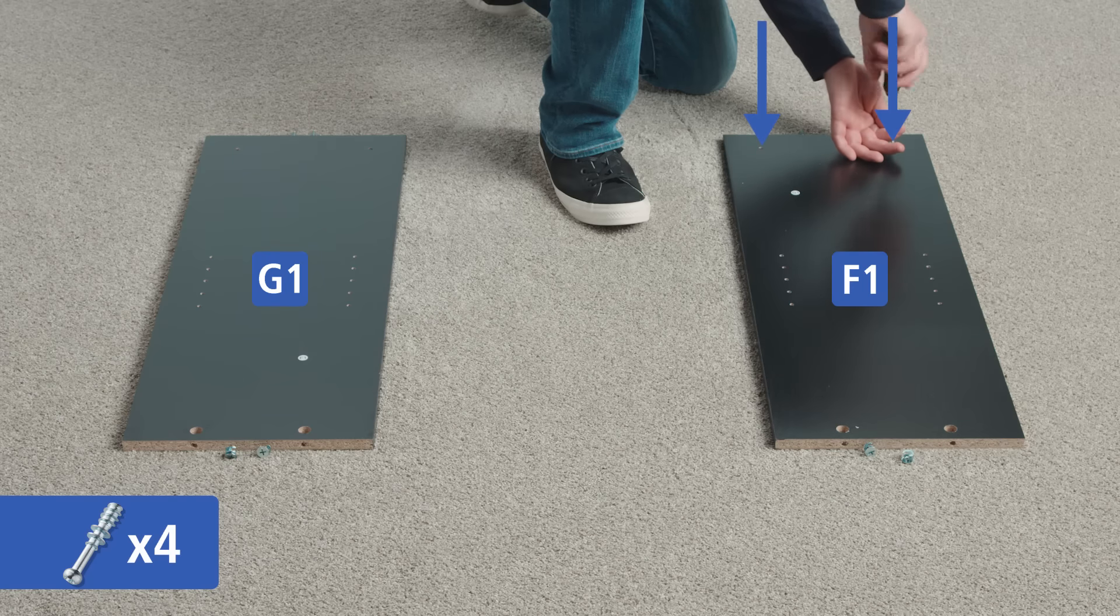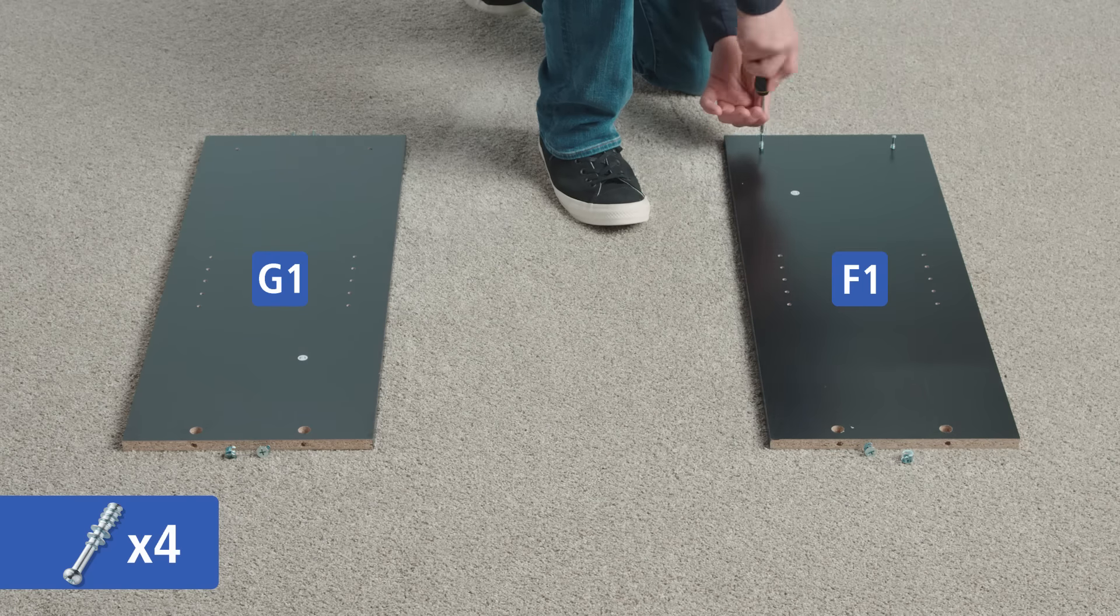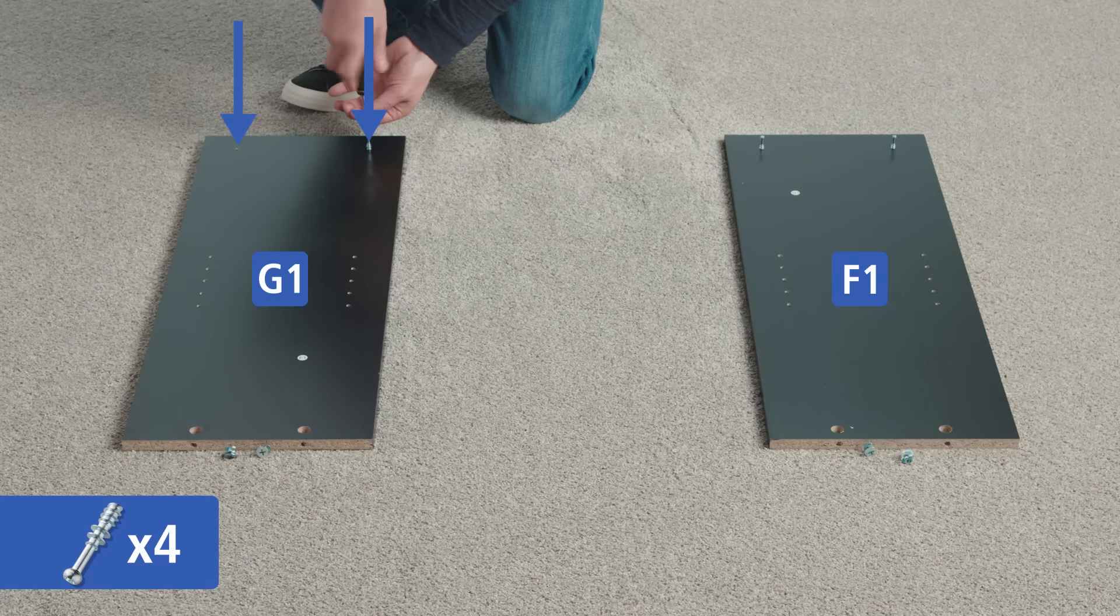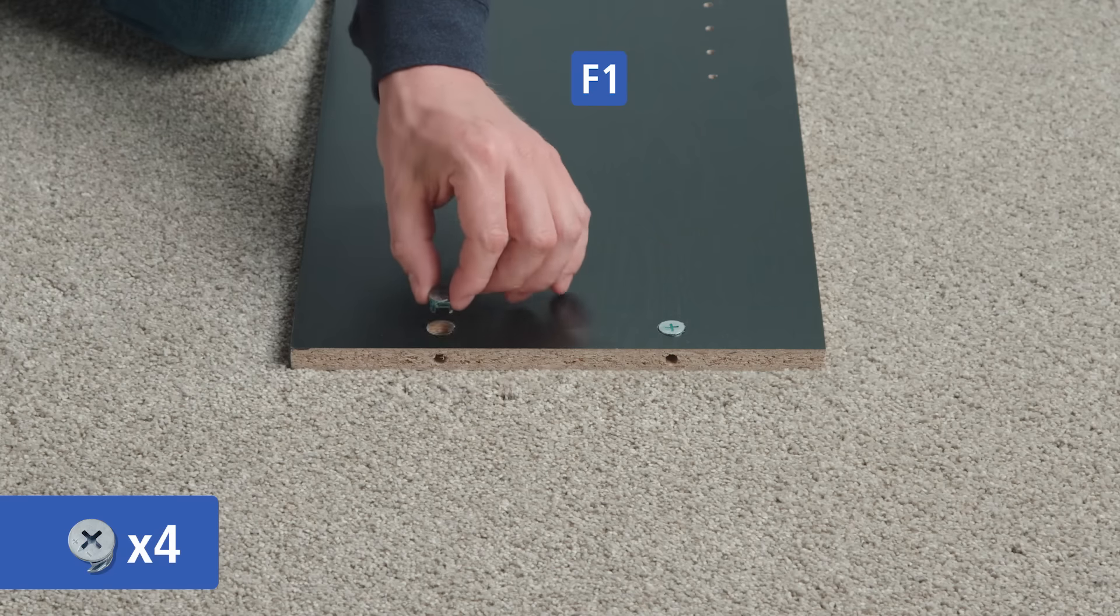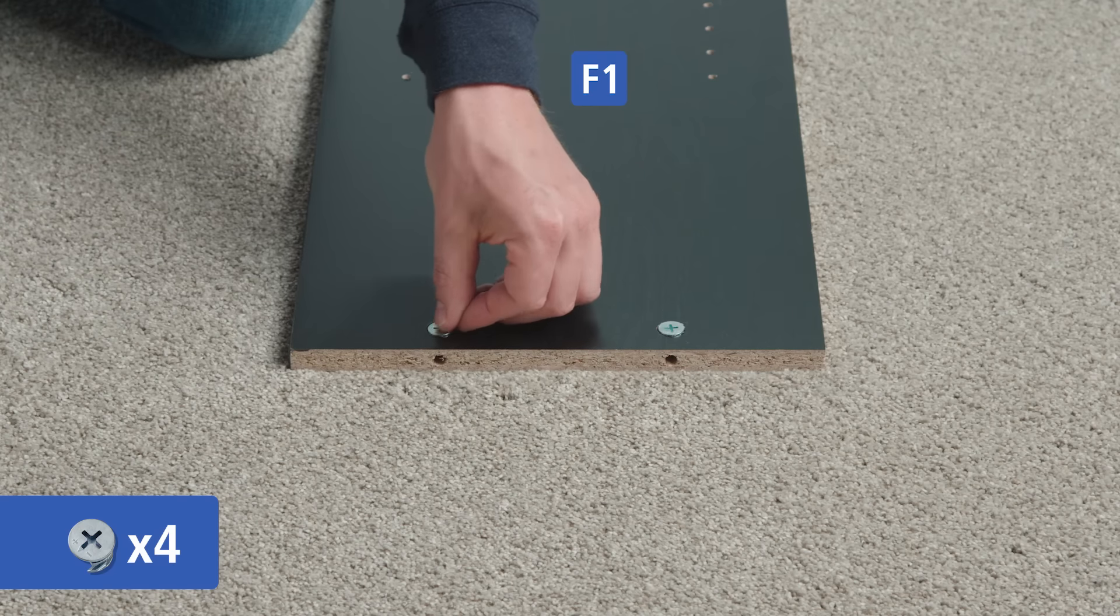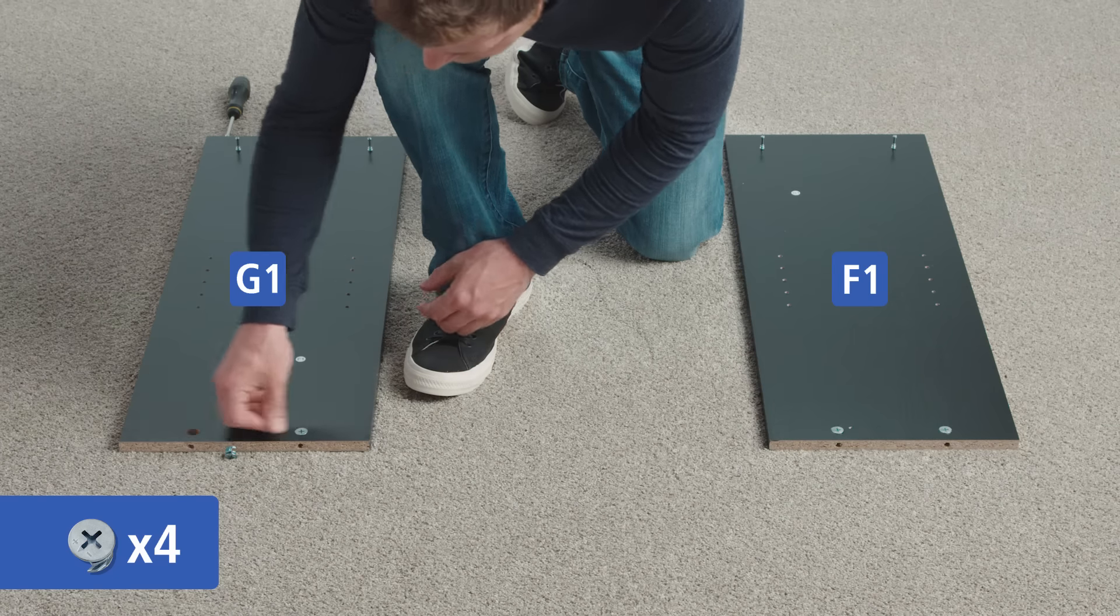Screw two cam bolts into the holes at the end of F1, then screw two more into the holes at the opposite end of G1. Press two cam locks into the holes at the end of F1, then press two more into the holes at the opposite end of G1.